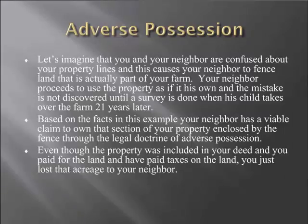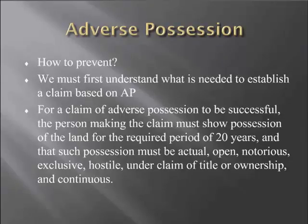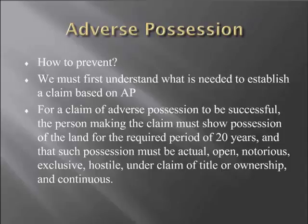That's a scary scenario, and unfortunately one that happens year after year in Maryland on farms. The most effective way to prevent adverse possession is to understand what is needed to establish a claim. For a claim of adverse possession to be successful, the person making the claim must show possession of the land for the required period of 20 years. The possession must be actual, open, notorious, exclusive, hostile, under claim of title or ownership, and continuous. To put it in basic terms: you have to use the land for 20 years and your use must meet these certain criteria.